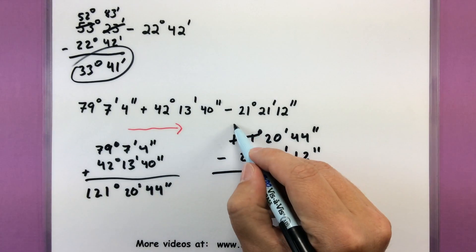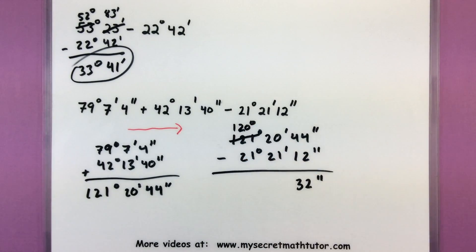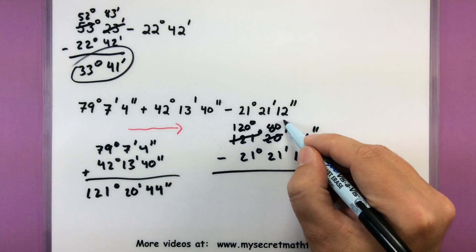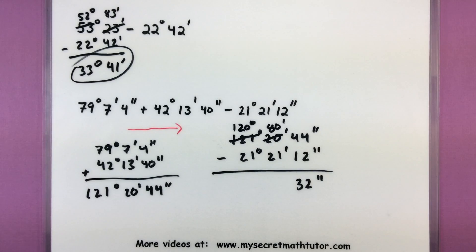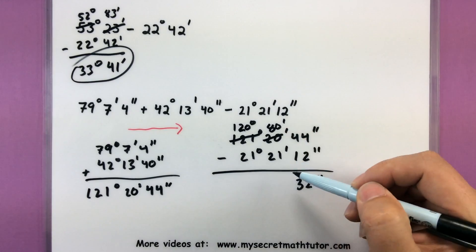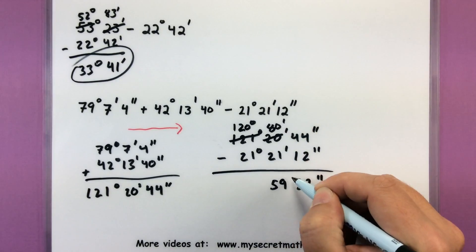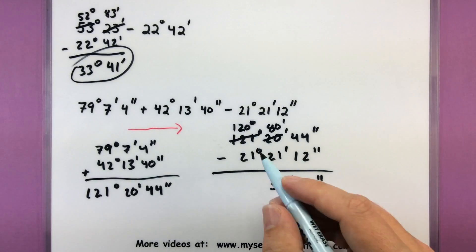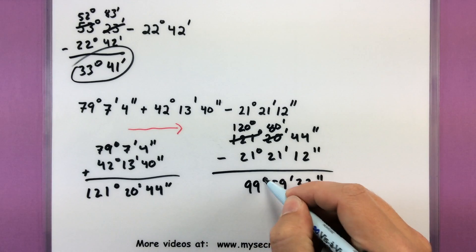So let's do that. We'll grab one of our degrees, reducing that, and add 60 to our minutes, turning this into 80. Now we can subtract just fine. So 80 minus 21, that'll give us 59 for our minutes. And 120 minus 21, that'll give us 99 degrees.